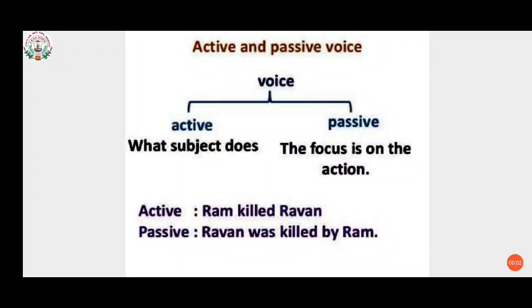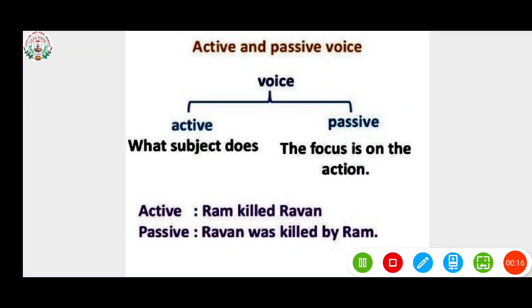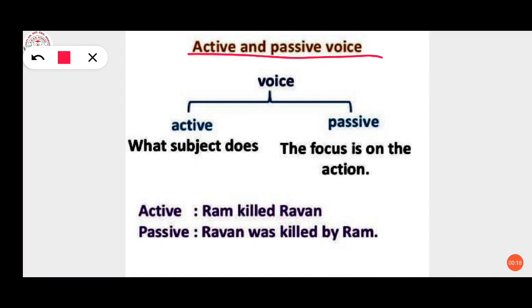Good morning students. Today we will do the grammar lesson number 14: active and passive voice. We have two types of voice: active voice and passive voice. The verb is said to be in the active voice when the subject does something.